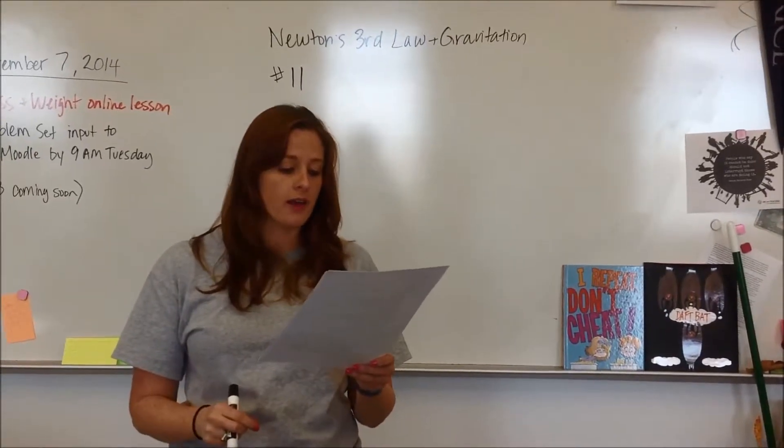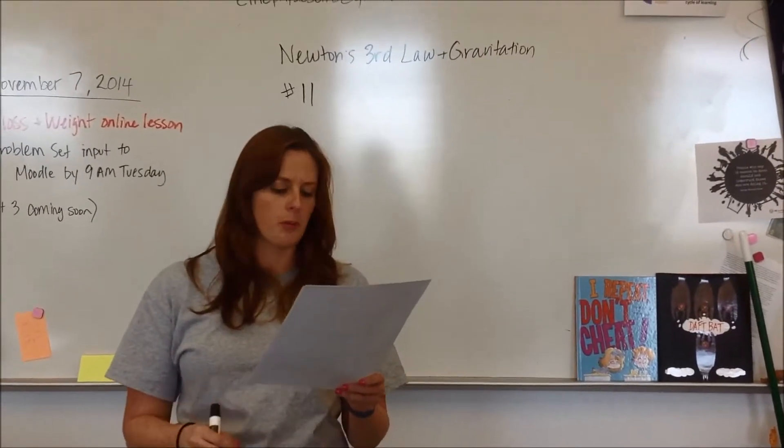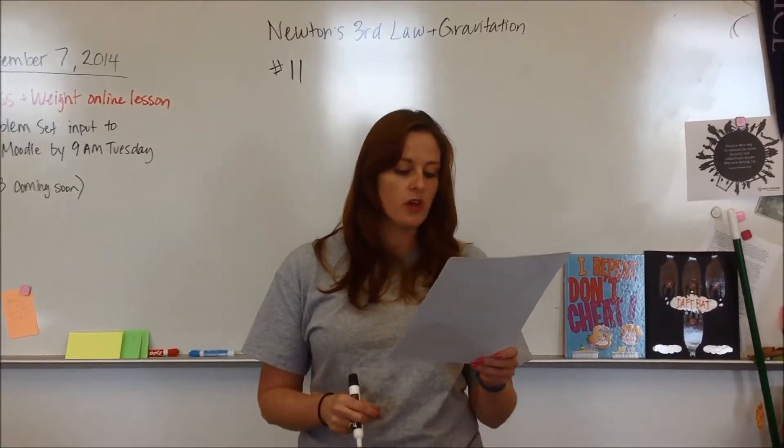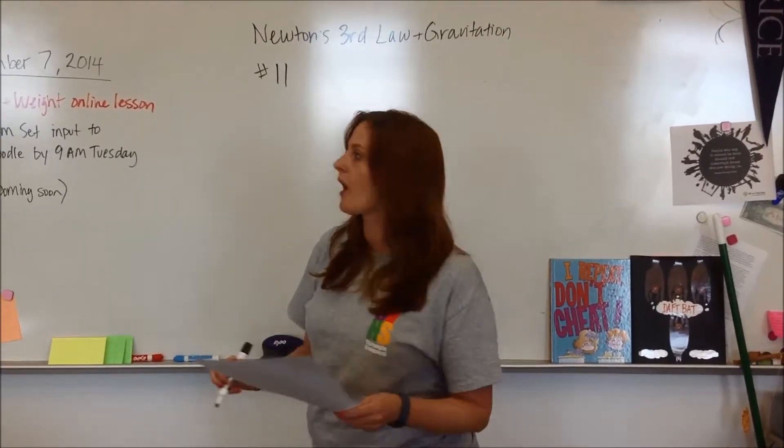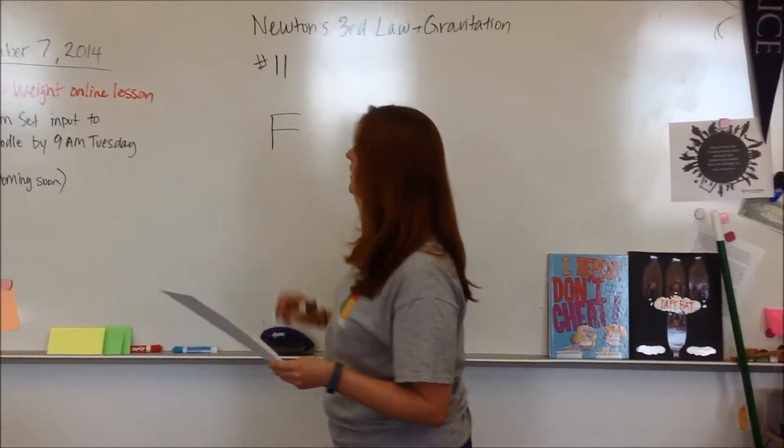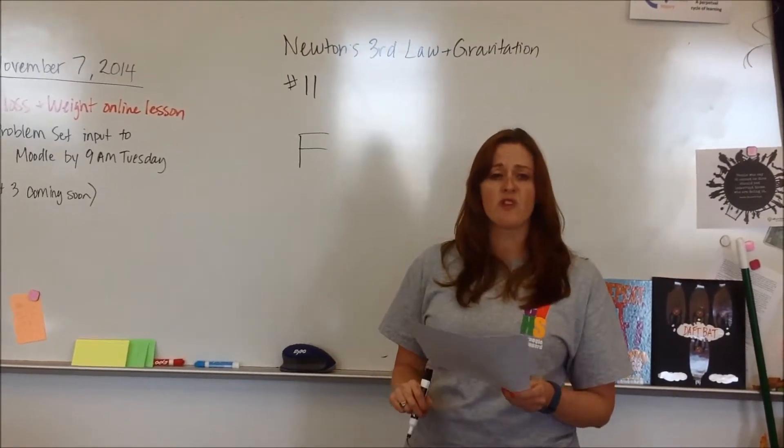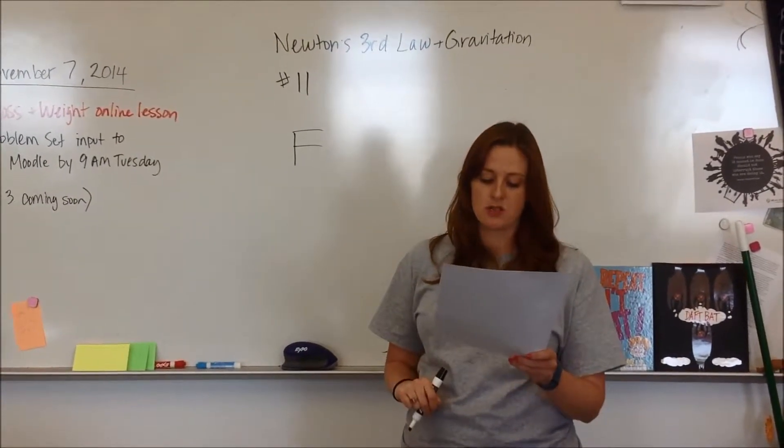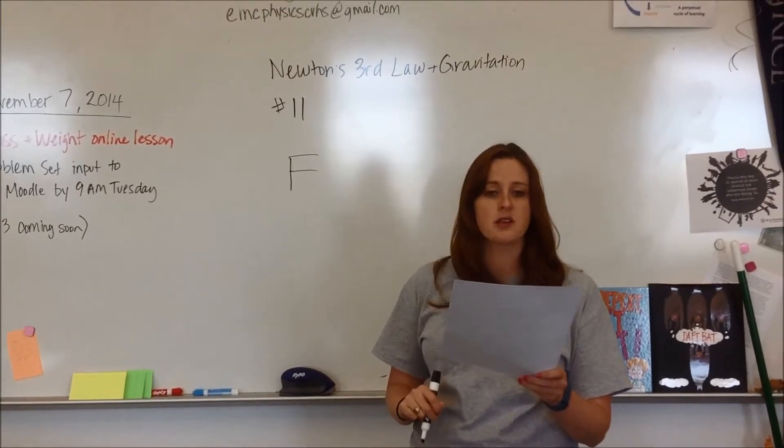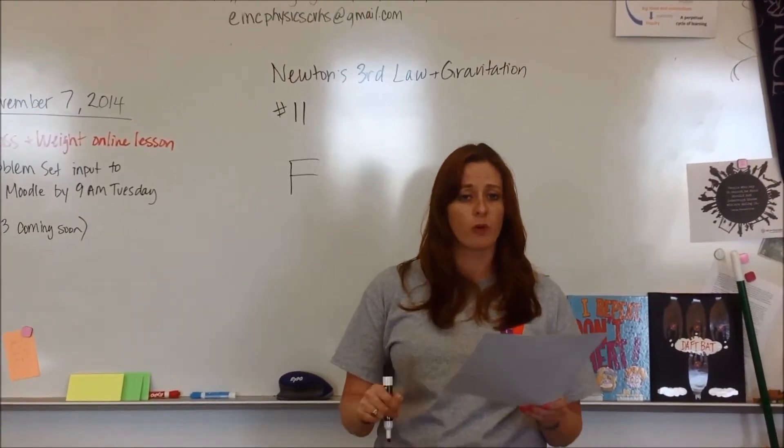This is similar to number 9, except now we're dealing with a few different numbers. Two iron spheres initially have some gravitational force F. We're then going to move the spheres to one-half their original distance and allow them to rust, and their mass increases on each by 41%.